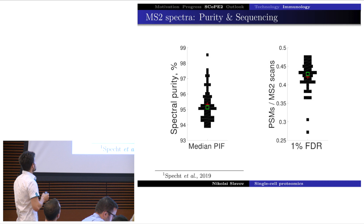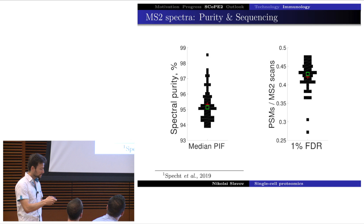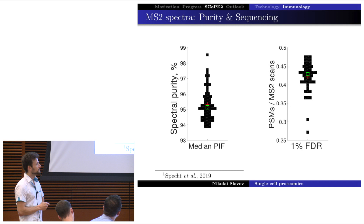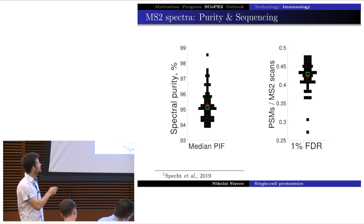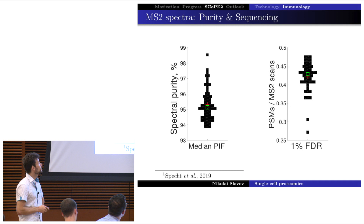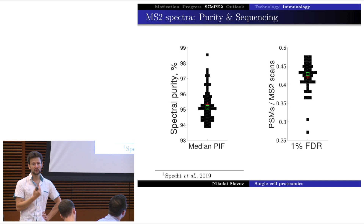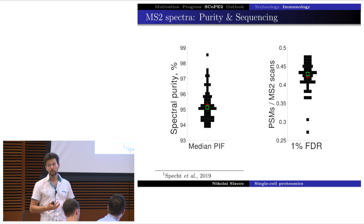MaxQuant provides an estimate of MS2 spectra purity through the precursor ion fraction. We worked hard to improve spectra purity to minimize co-isolation in quantification. The median precursor ion fraction across our runs is 95% — we are quite happy with this, achieved through iterative optimization using DMS. Currently we confidently assign peptide sequences at 1% FDR to about 40-50% of ions sent for MS2, partly thanks to DART-ID using retention time information to increase confidence in peptide assignments.